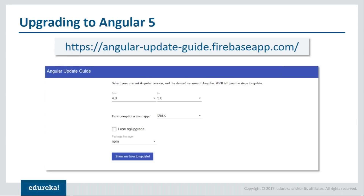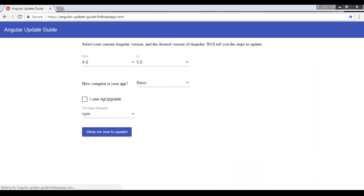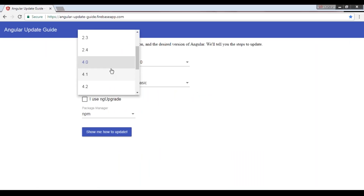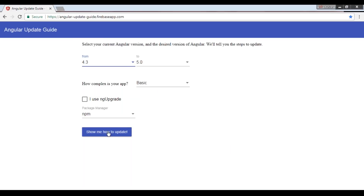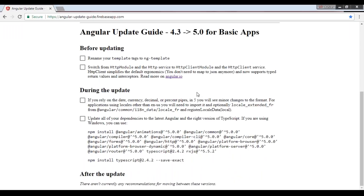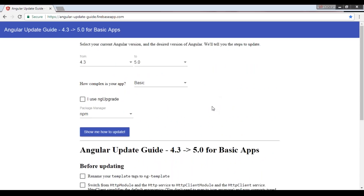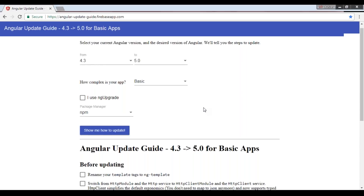Finally, we've covered all the changes in Angular 5. The Angular team is quite agile, releasing new versions every six months. If you're wondering how to upgrade your application to Angular 5, they've built an Angular Update Guide at update.angular.io. You can specify your current version — for example, from 4.3 to 5.0 — click 'Show me how to update', and it will list all the changes you need to make in your code base.